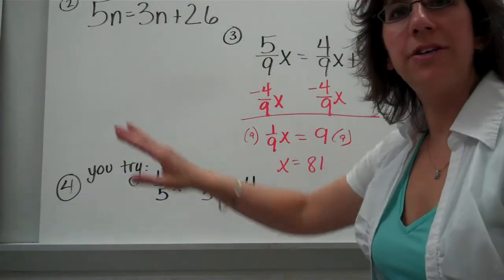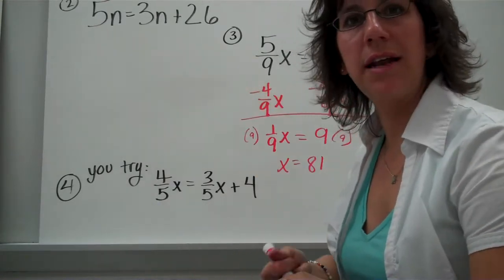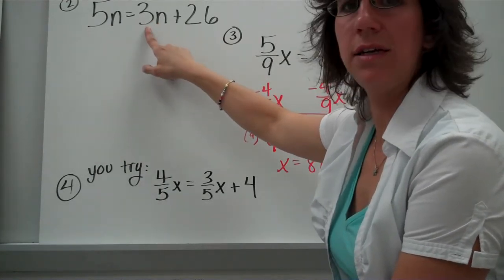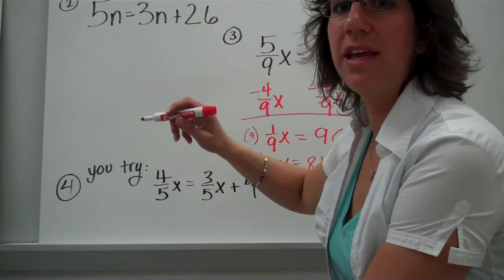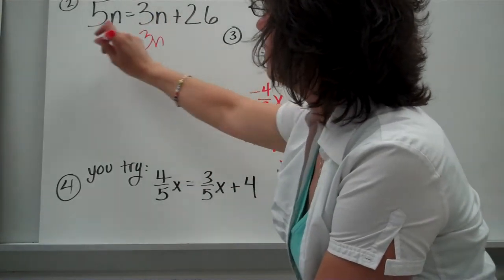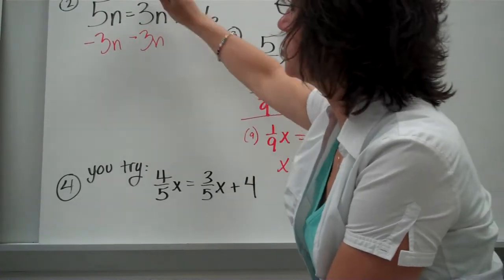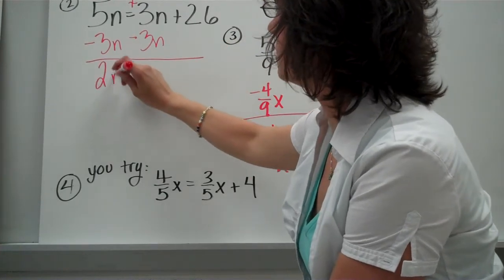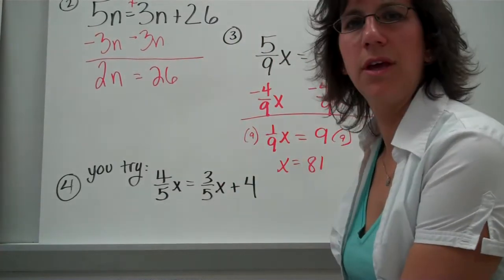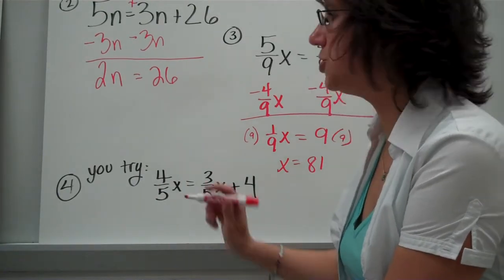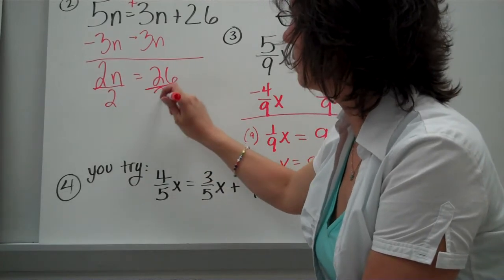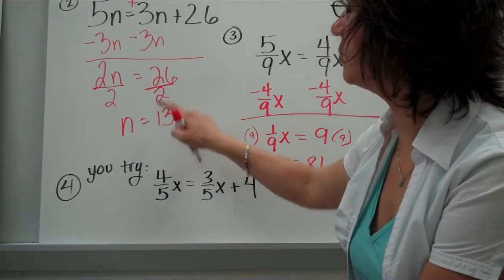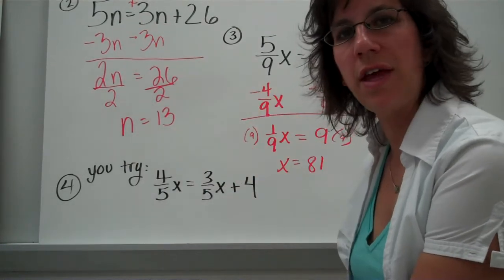Were you able to work that out all by yourself? You want to put the N's on the same side of the equal sign — put them together. So we want to move this 3N to the other side. Every time you cross the equal sign, you have to do the inverse, so we're going to subtract 3N. You can also think of it as positive 3 going to negative 3. So we've got 2N equals 26. 2 times what equals 26? The opposite of multiplying is dividing. N equals 13. You can check your answer by putting 13 back in where the N's are and see if they equal each other.